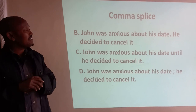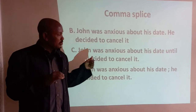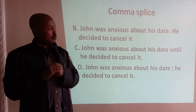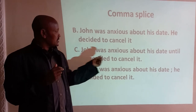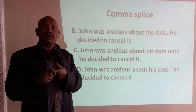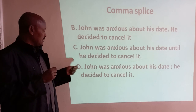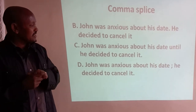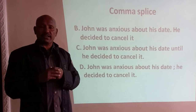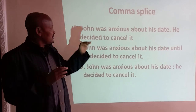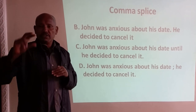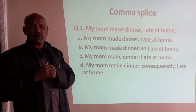Another correction uses a subordinating conjunction: 'John is anxious about the death; he decided to cancel it' — inserting a subordinating conjunction between the two main clauses. The fourth way is to use a semicolon: 'John was anxious about his death; he decided to cancel it.' A semicolon is another option for correcting comma splice. These are the four ways of correcting sentence errors formed by the wrong use of a comma.